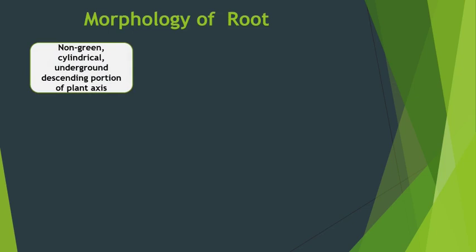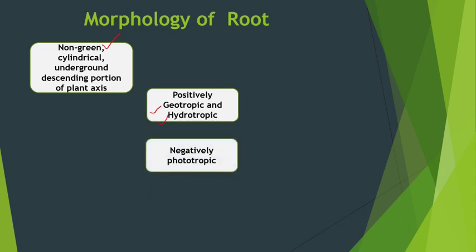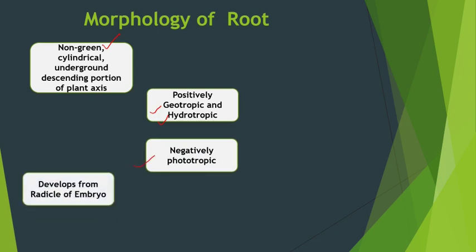Morphology of the root. Root is usually non-green in color. As it is non-green, it cannot carry out photosynthesis. It is cylindrical, underground, descending portion of the plant axis. It is descending — it travels towards the ground and therefore it is positively geotropic. It travels towards water, so it is positively hydrotropic. The roots usually go away from sunlight, so they are called as negatively phototropic.